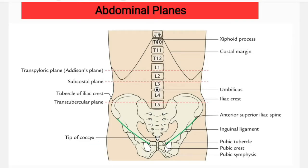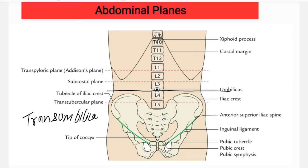The next plane is the trans-umbilical plane — again a transverse plane. It passes through the level of the umbilicus, which corresponds to the intervertebral disc between L3 and L4.